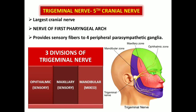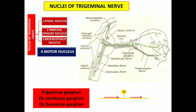The ophthalmic and maxillary divisions are sensory, while the mandibular nerve shows mixed fibers — both sensory and motor. Most neurons in the trigeminal nerve are sensory neurons carrying sensations from various territories: ophthalmic, maxillary, and mandibular. These neurons are pseudo-unipolar neurons whose cell bodies are located in the trigeminal ganglion. They have a peripheral process receiving sensory stimuli and a central process connected to various nuclei of the trigeminal nerve located throughout the brainstem.